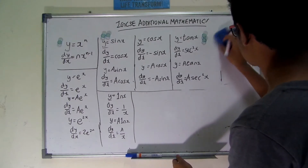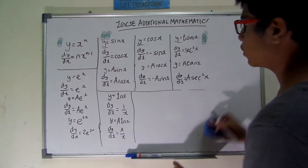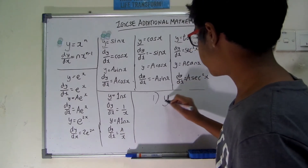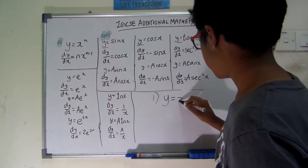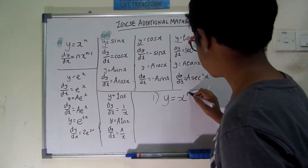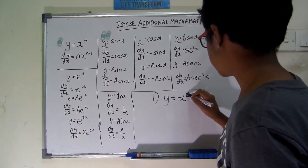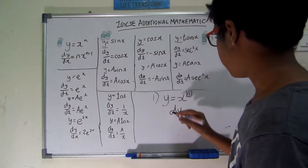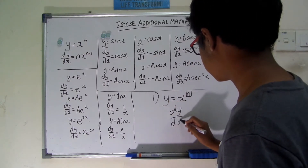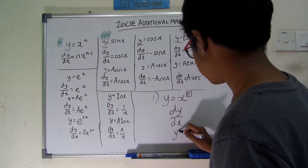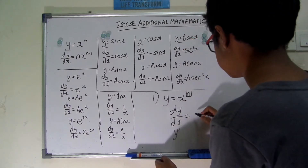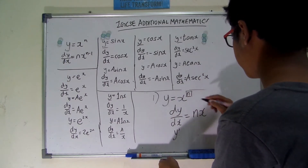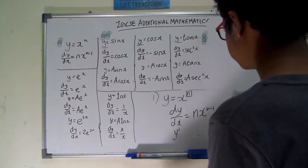Theory number one states that when y equals x to any power n, where n represents any integer, the derivative of y with respect to x — also written as y-dash — equals n brought down in front, times x to the power of n minus one.